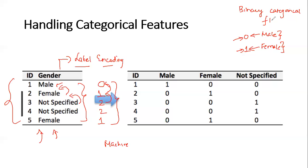For binary categorical features, we should basically stop at label encoding because we get values as zeros or ones, which is very easy for a machine learning algorithm to distinguish. But if you have multiple categorical features, we should not stop at label encoding and should begin a new step which is called one hot encoding.